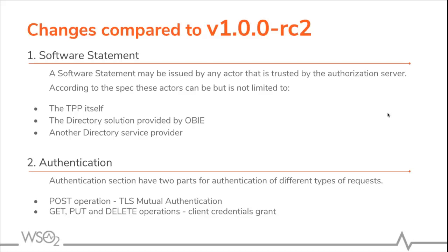When we consider authentication, it is divided into two parts based on the request type. For version 1.00RC2, there was only TLS mutual authentication, but in version 3.1 and 3.2, for POST requests it is TLS mutual authentication, and for GET, PUT, and DELETE requests, client credential grant is used as the authentication mechanism.